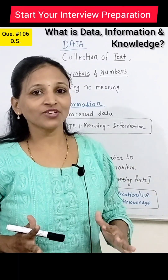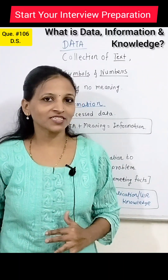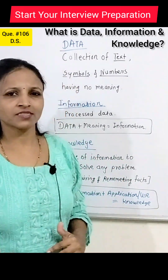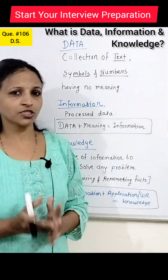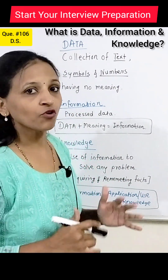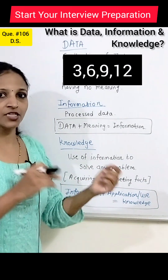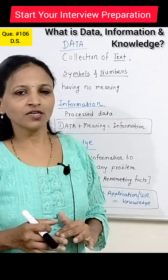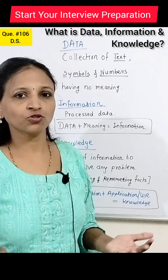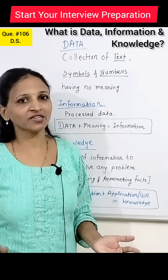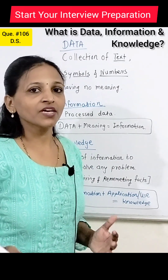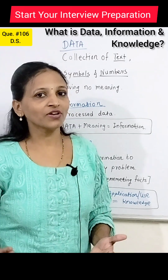Hello friends. What is data, information, and knowledge? Data is nothing but a collection of facts, symbols, and numbers, but that collection does not have any meaning. For example, if we write 3, 6, 9, 12 — this is just a combination of numbers and a special symbol, the comma, but it is not having any meaning. That is considered as data.